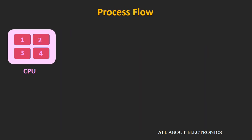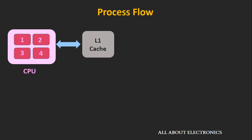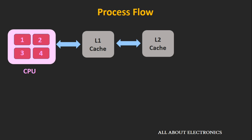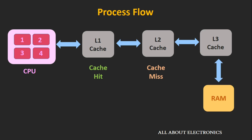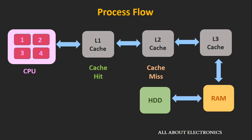Now let's see the process flow when the CPU needs some data. Whenever the CPU needs data, it first looks inside the L1 cache. If not found there, it looks inside the L2 cache. If not there, it looks into the L3 cache. If the CPU finds data inside the cache memory, it is known as a Cache Hit. If data is not available in the cache, it is a Cache Miss. If data is not in L3 cache, the CPU looks inside RAM. If still not found, it retrieves data from the hard disk drive.